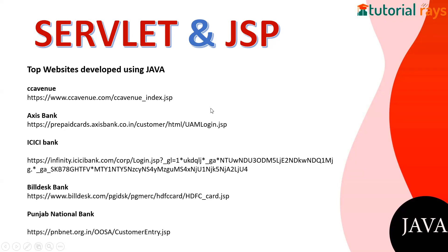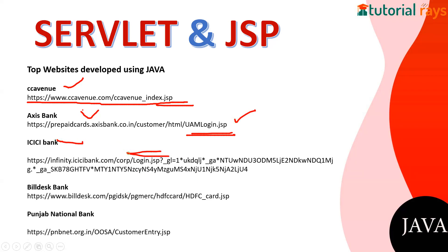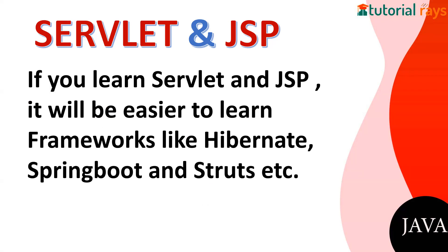Now let's see where top Indian websites use Servlet and JSP. CCAvenue — you might be familiar with it — uses JSP, as I've shown through this URL. Axis Bank also uses JSP. ICICI Bank also uses JSP. Punjab National Bank uses JSP as well. These are just the tip of the iceberg. The idea here is that wherever there are money transactions or higher security requirements, Java technology like JSP is used, because Java is a highly secure programming language.